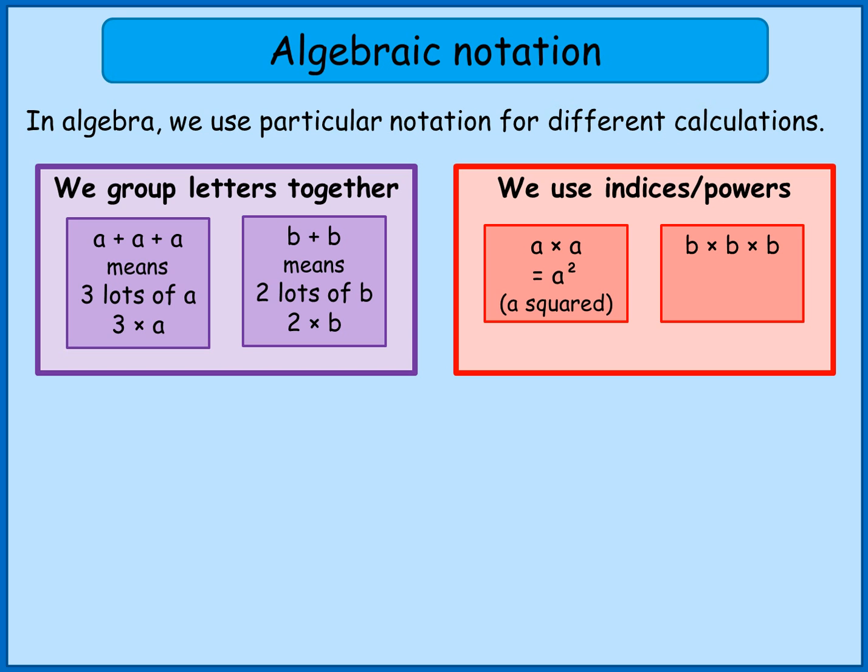So b times b times b—you can see I've got one, two, three b's there all multiplied together—so I'd write that as b cubed and say b cubed.